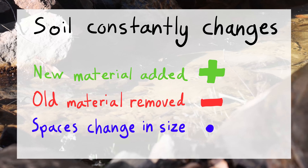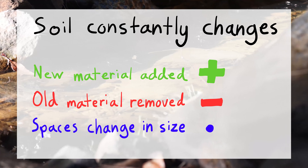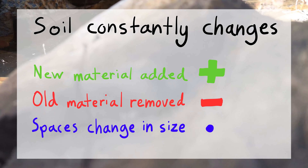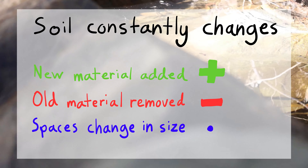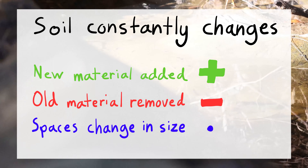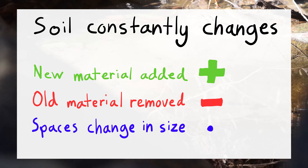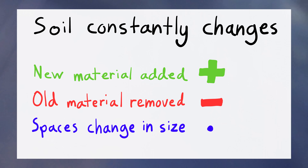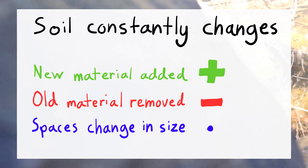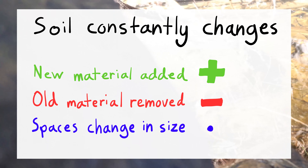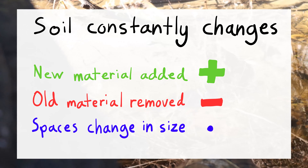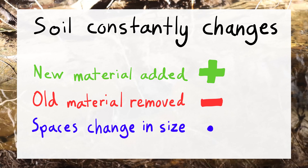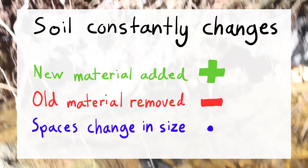Soils are dynamic and change over time. New material is deposited on the surface by wind or rain and can be taken below the surface. Nutrients are extracted by animals and plants or washed away. Organic material decomposes while inorganic particles become smaller with weathering and cause spaces to change in size.